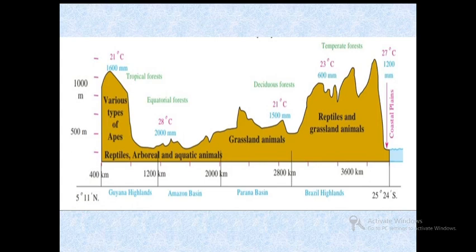Next is the Amazon Basin which extends to 1200 kilometers and the equator passes through this Amazon Basin. Here you will find equatorial forests and as it is near the equator, the rainfall received is the highest at 2000 millimeters. The temperature is 28 degrees Celsius. The wildlife found in the Amazon Basin is reptiles, arboreal and aquatic animals. Arboreal means living in trees.